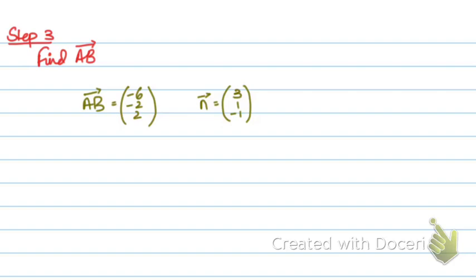AB can be written as minus 2 and then 3, 1, minus 1. And this over here is the normal. So the vector AB is indeed a scalar multiple of the normal.